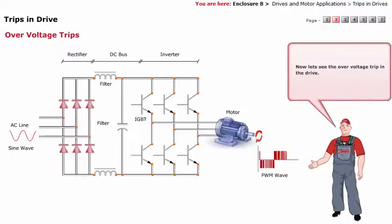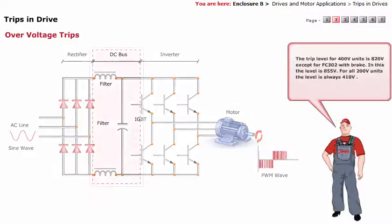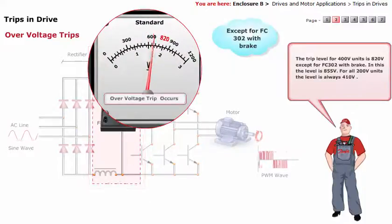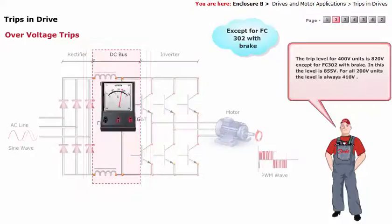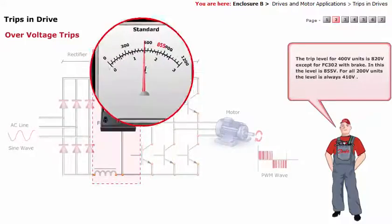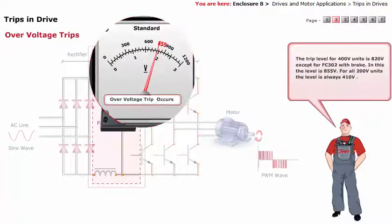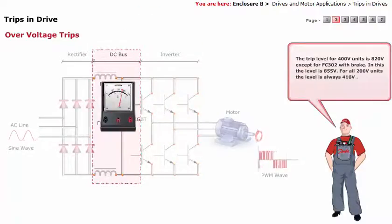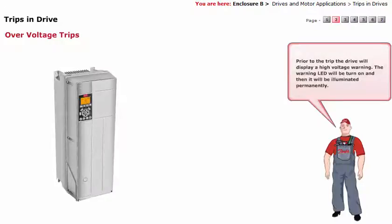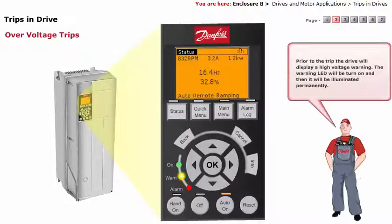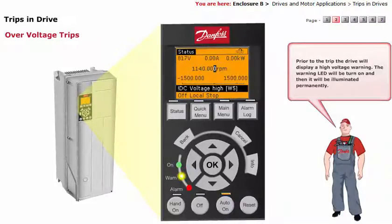Now let's see the over voltage trip in the drive. The trip level for 400-volt units is 820 volts, except for FC302 with brake, where the level is 855 volts. For all 200-volt units, the level is always 410 volts. Prior to the trip, the drive will display a high voltage warning, and the warning LED will be turned on and then illuminated permanently.